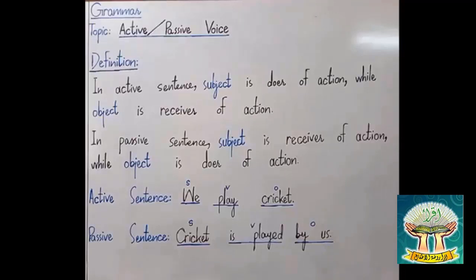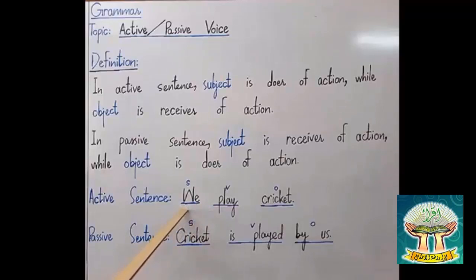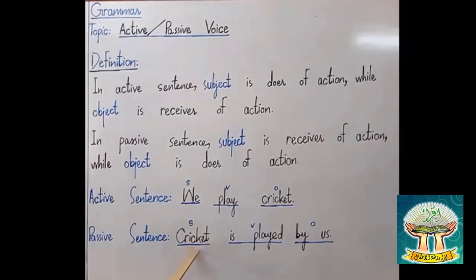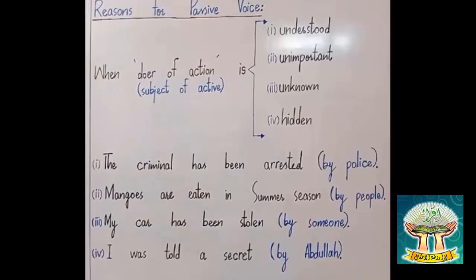This is exemplified on the board. In an active sentence: 'We play cricket.' Here 'we' is the subject, 'play' is the verb, and 'cricket' is the object — so the doer is 'we' and the action is performed on 'cricket.' When we convert this sentence into passive voice it becomes: 'Cricket is played by us.' The subject of the passive sentence is no longer the doer of the action.